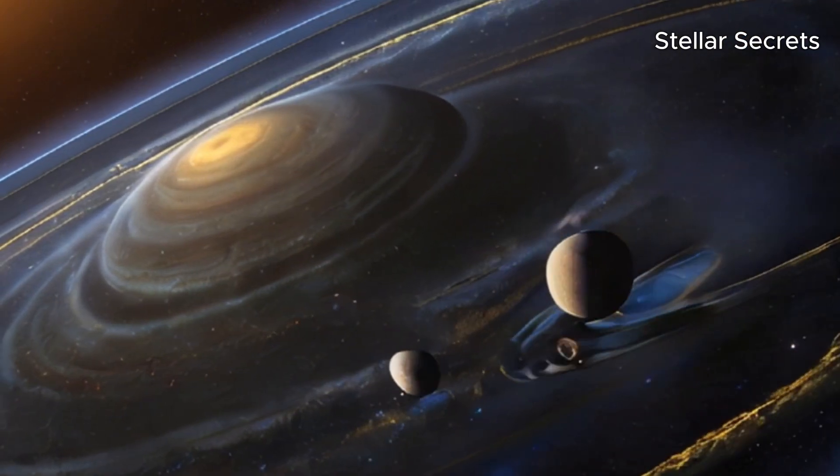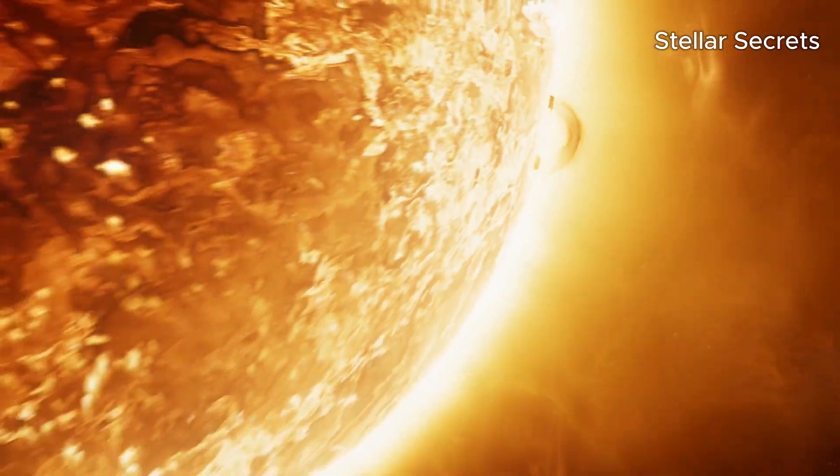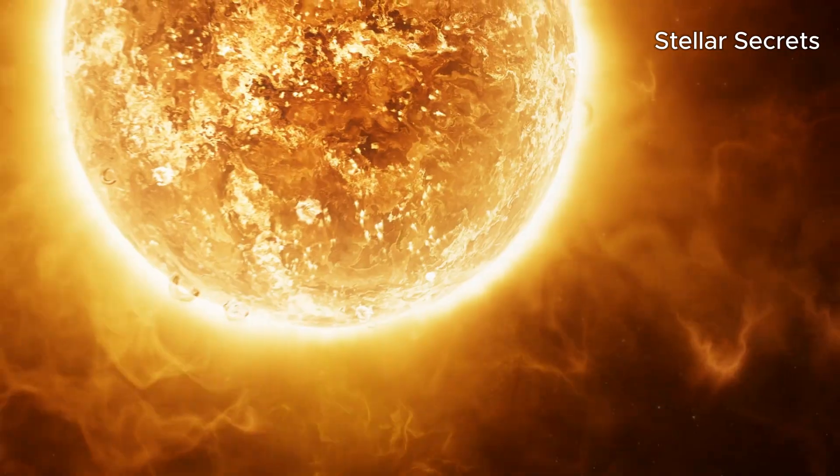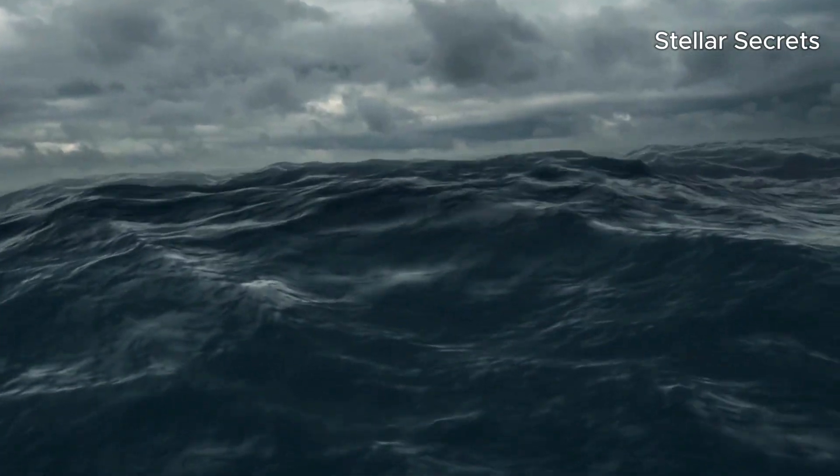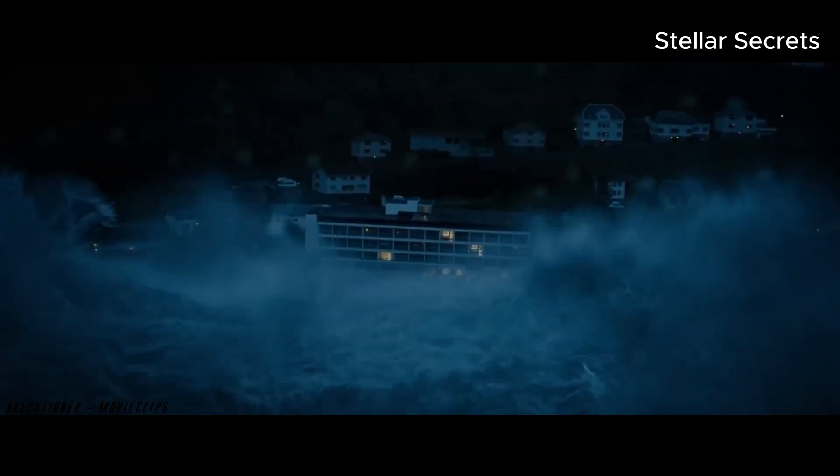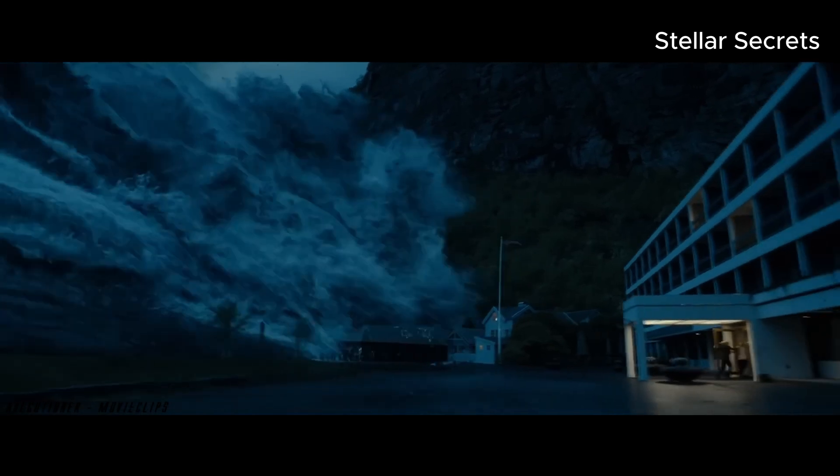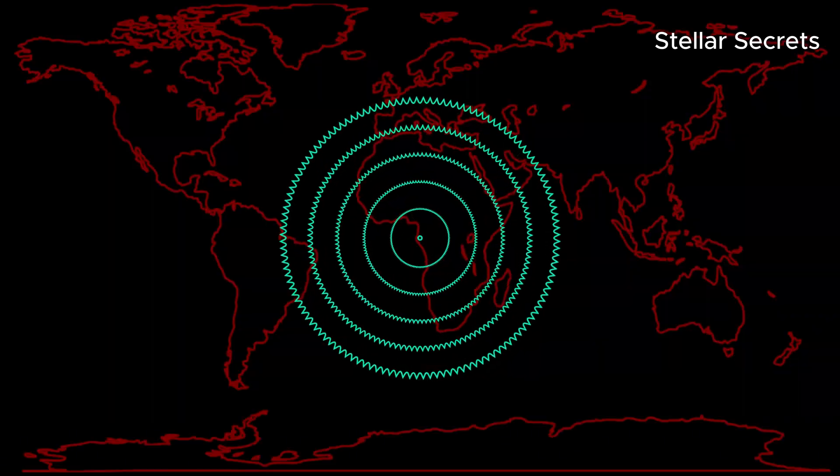The rogue planet's approach causes chaos. Its huge gravity starts to mess with our solar system. Oceans rise, creating giant tsunamis that destroy coastal cities. Millions are forced to flee as the sea takes over the land.